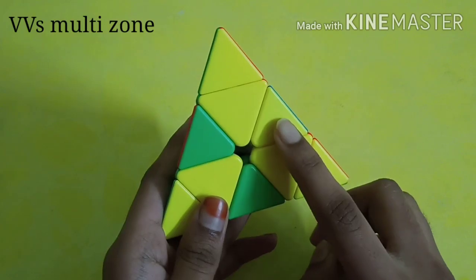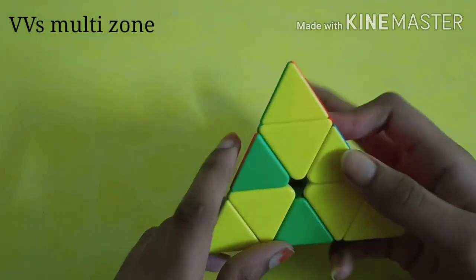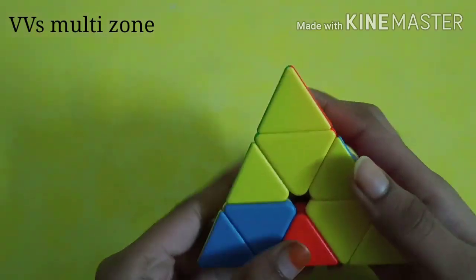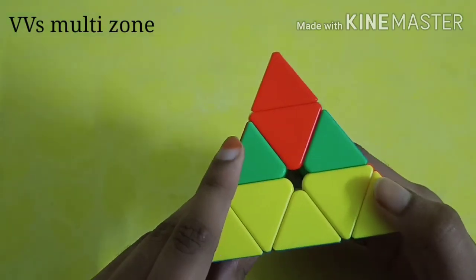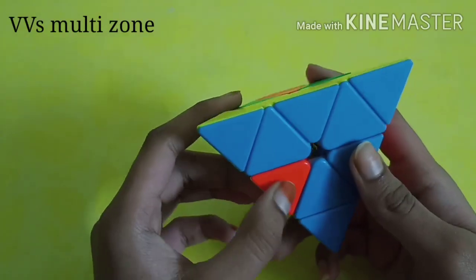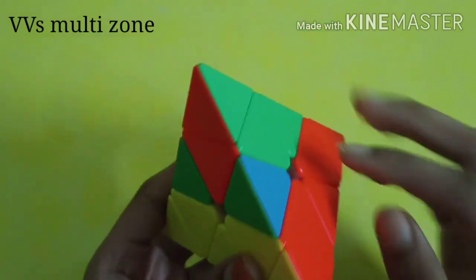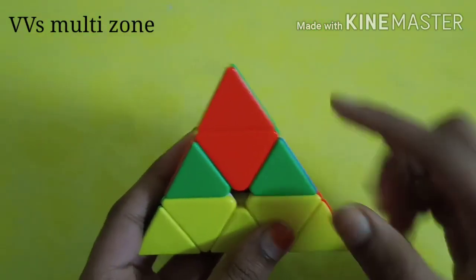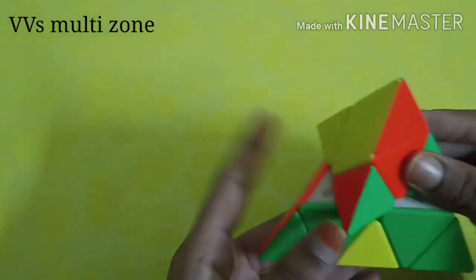The adjacent is yellow, so you have to perform now the left algorithm, that is left, up, and left inverse. So you got here.